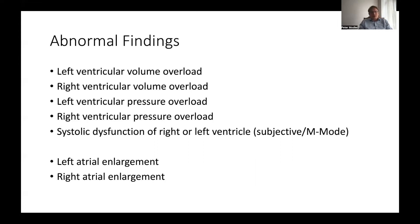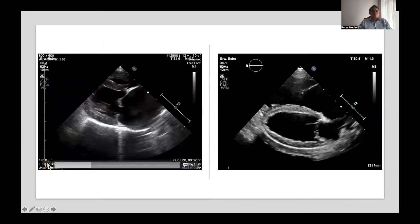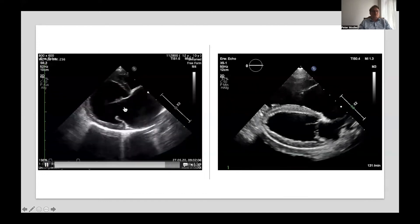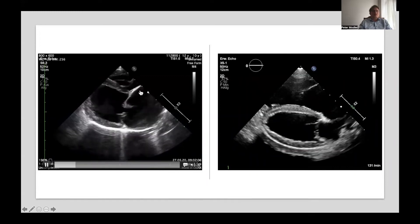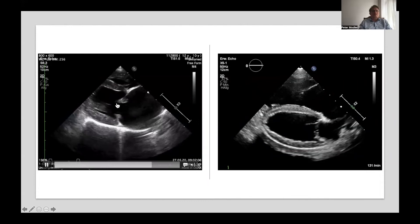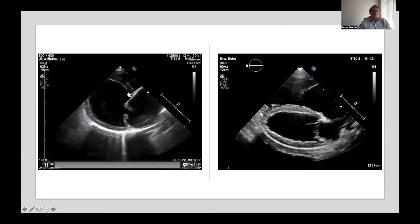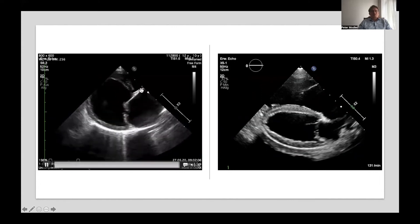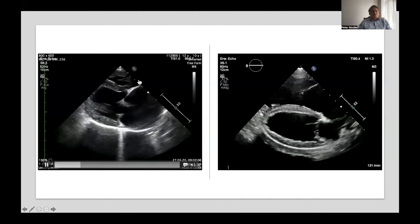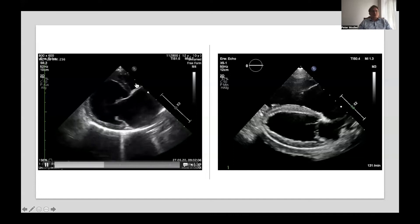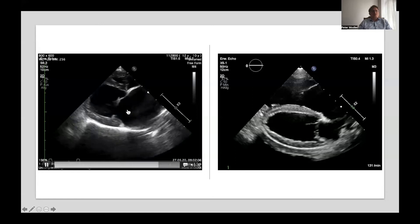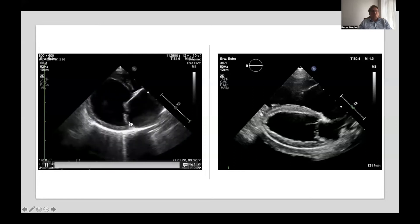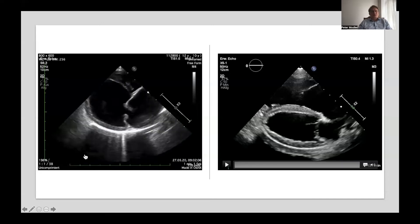Abnormal findings include left or right ventricular volume overload, left or right ventricular pressure overload, systolic dysfunction of either ventricle, and left or right atrial enlargement. Looking at the left video — a dog with severe mitral valve disease — you can see the ruptured chorda and the space between the valve leaflets, indicating severe mitral valve disease even without Doppler. You can easily see the volume overload: the left ventricular free wall fits about 10 times into the lumen of the left ventricle, the interventricular septum is not straight, and the left atrium is much larger than the right atrium. This is a case of severe left ventricular volume overload and left atrial enlargement.